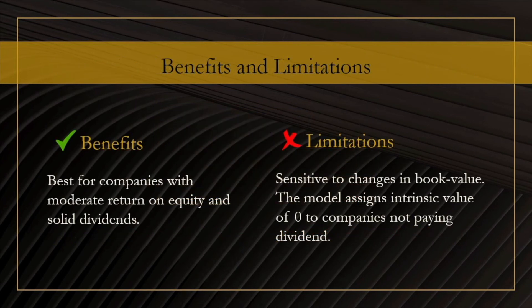Let us now discuss some benefits and limitations of the NAV approach. One important benefit is its wide applicability as a valuation tool for mutual funds and exchange-traded funds — for example, exchange-traded mutual funds publish their NAV on a daily basis. The limitation is that for a typical company, the NAV approach would not provide a fair intrinsic value, but rather a very pessimistic one. That said, as we have seen with Warren Buffett, one can take advantage of this and use the NAV approach to find a bargain.